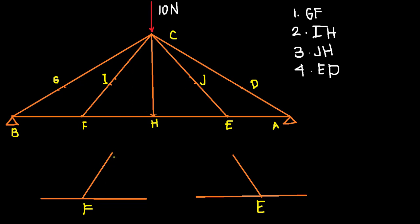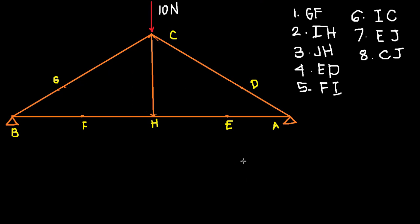At joints F and E, there's no external loading and no reactions, so by inspection those non-collinear members are zero force members. That gives us members FI and EJ as zero force members. Note these are two separate members. Since FI and EJ are zero force members, their connected members — CI and CJ — are also zero force members, giving us four more zero force members.